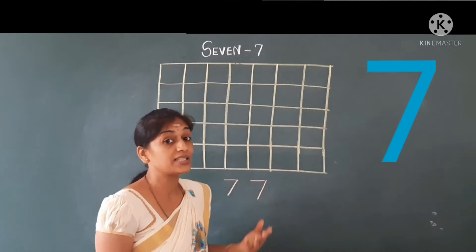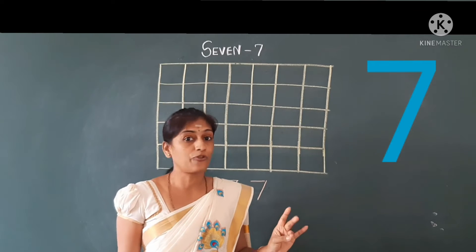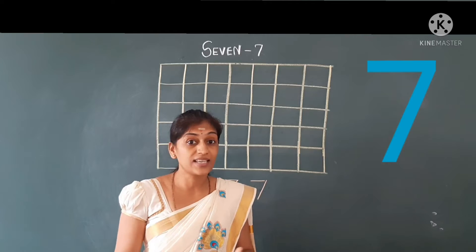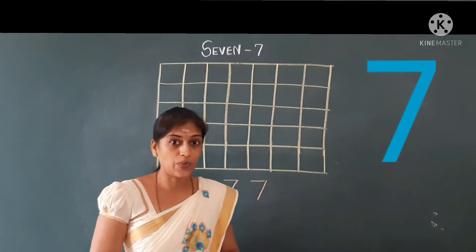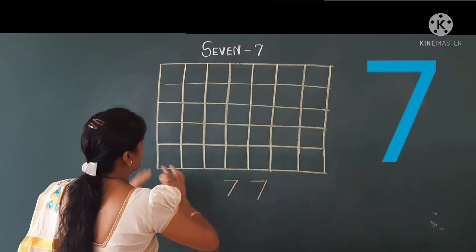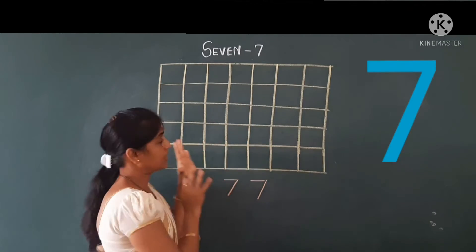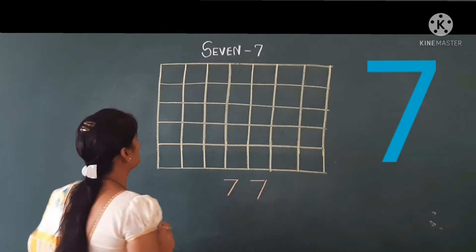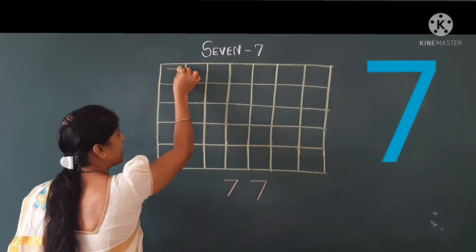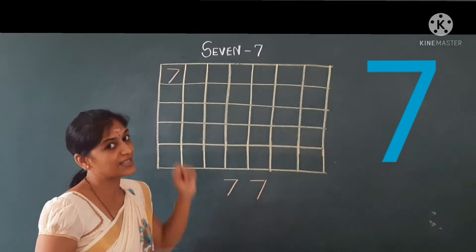In the previous class we learned numbers 1 to 6. Now the next is number 7. So we will write number 7. This is the box-line page. We will write: one sleeping line and one slanting line — and this is number 7.